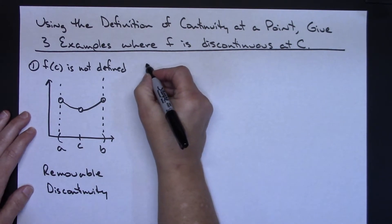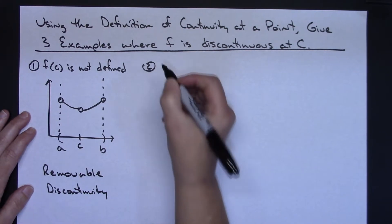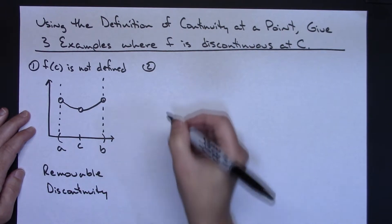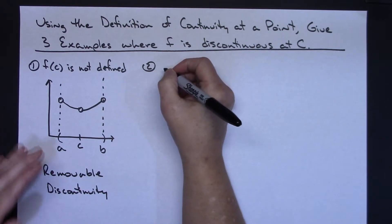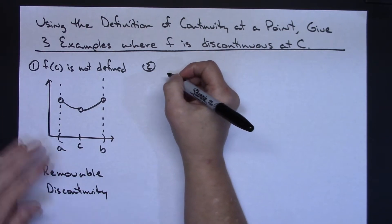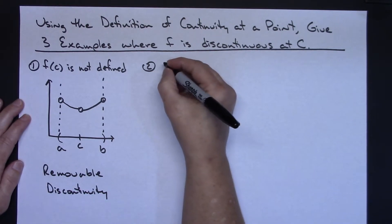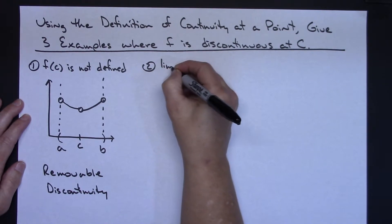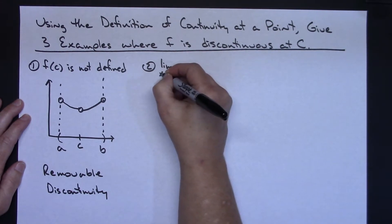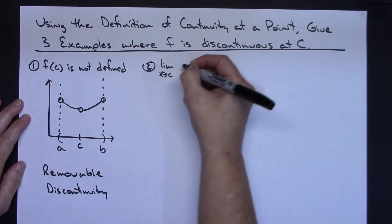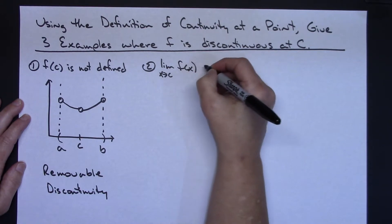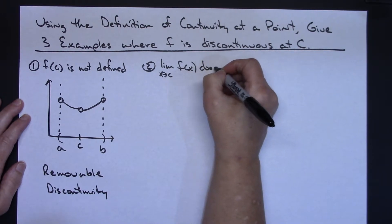For my second example, I take the second part of the definition which says the limit has to exist. So if I want to show that it's discontinuous at c, I would have the limit as x approaches c of f of x does not exist.